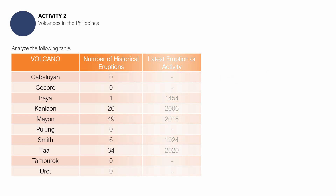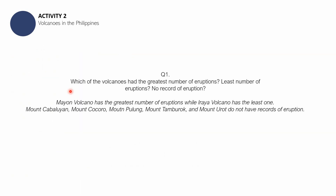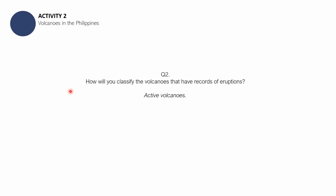Finalize your answers. Let us now proceed with checking your work. For question one, the acceptable answers are: Mayon Volcano has the greatest number of eruptions, while Iraya Volcano has the least. Mountains such as Kabaluyan, Kokoro, Pulong or Tapulong, Tamburok, and Urot do not have records of eruption. For question two, you call volcanoes that have records of eruptions active volcanoes. For question three, you call volcanoes with no record of eruption inactive volcanoes.